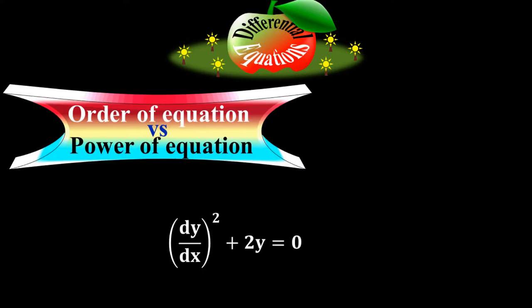Let me show another differential equation. The order of this equation is first order because the maximum derivative term is dy/dx, which is the first derivative term. The power of this equation is 2, because the power of the equation is the power of the maximum derivative term, and dy/dx is raised to the power 2.